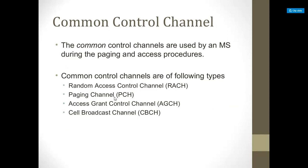The access grant channel is used by the base station to provide forward link communication to the mobile. It carries data that instructs the mobile on how to proceed.